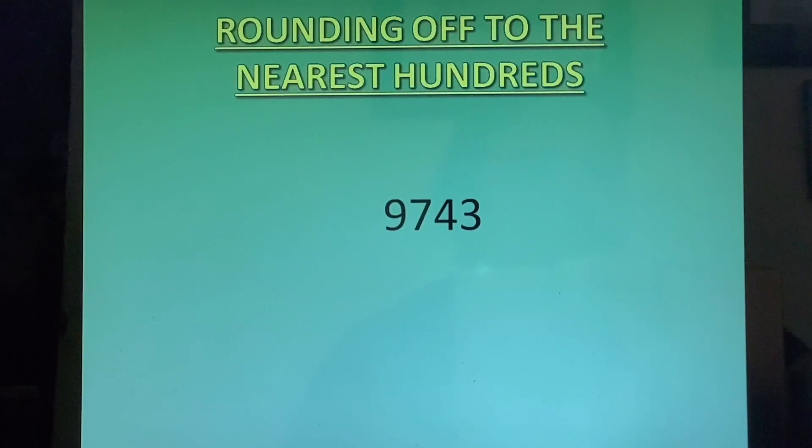Now rounding off to the nearest hundreds. So for hundreds we will look at the place value on the right of it, which is tens. So at tens place we have 4. 4 is less than 5. So we will not change the digit at hundreds place. We will only convert tens and ones to 0. So our answer will be 9700.